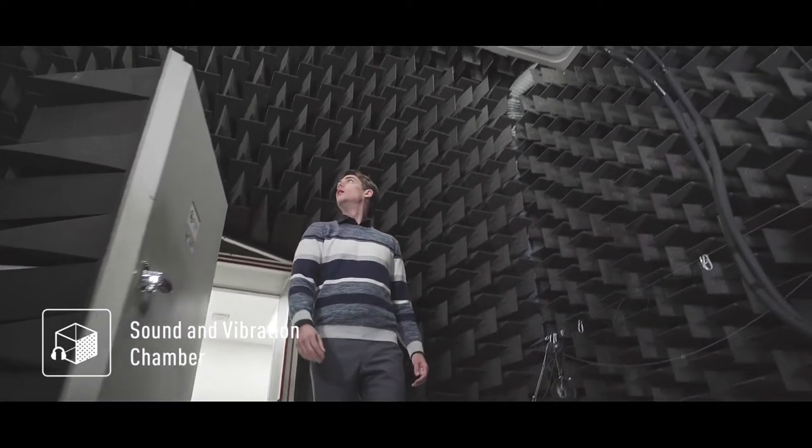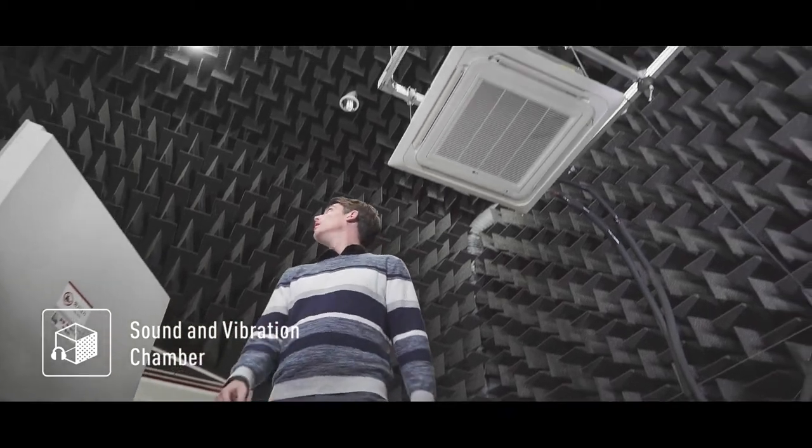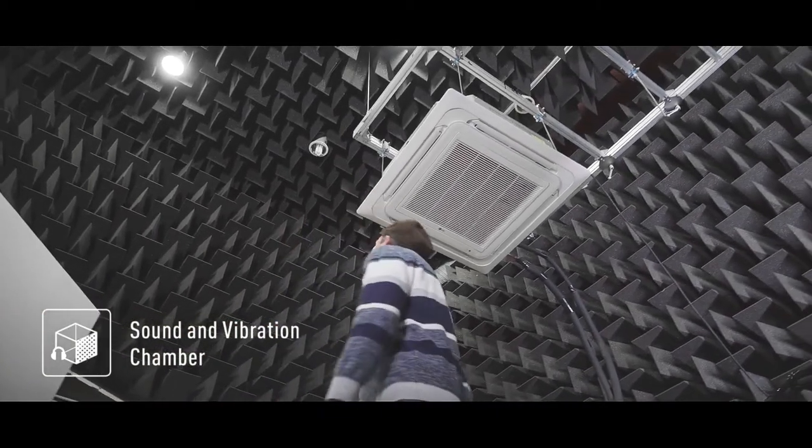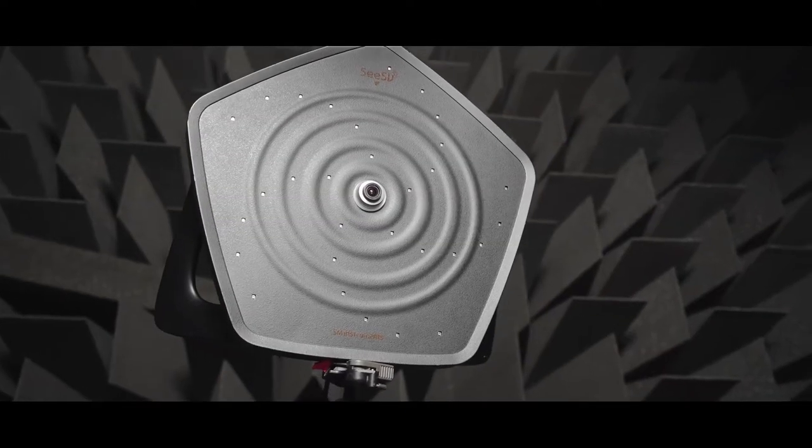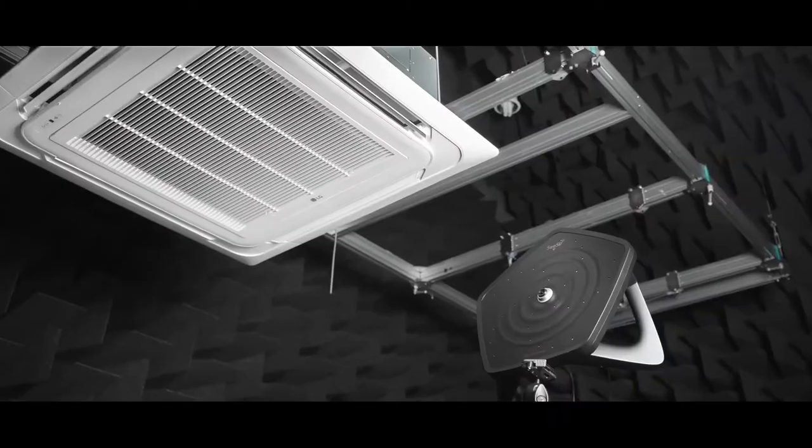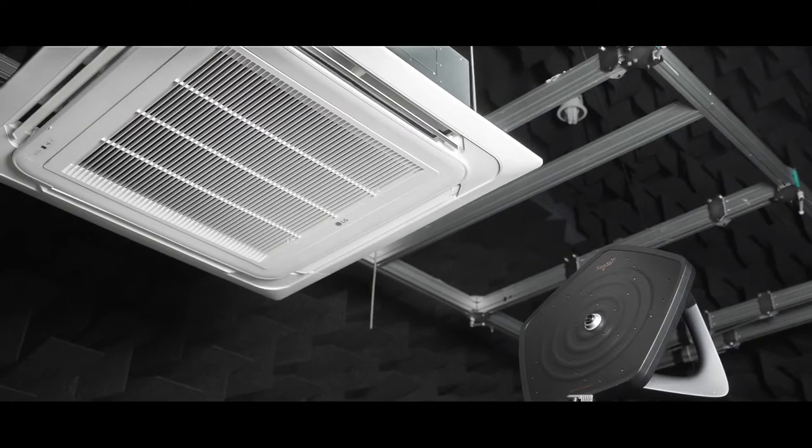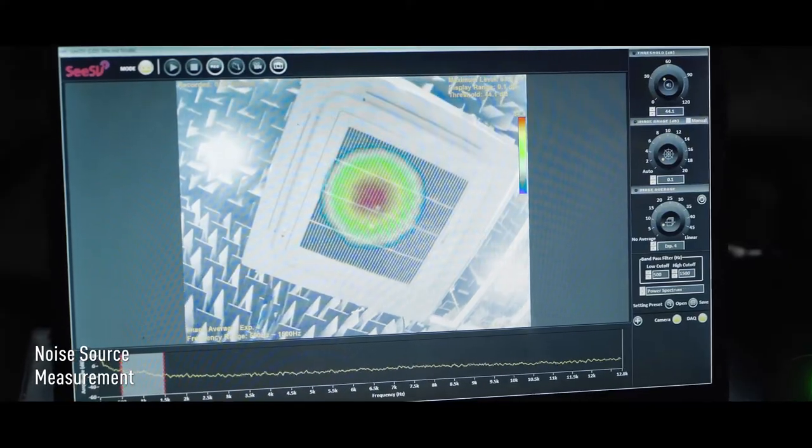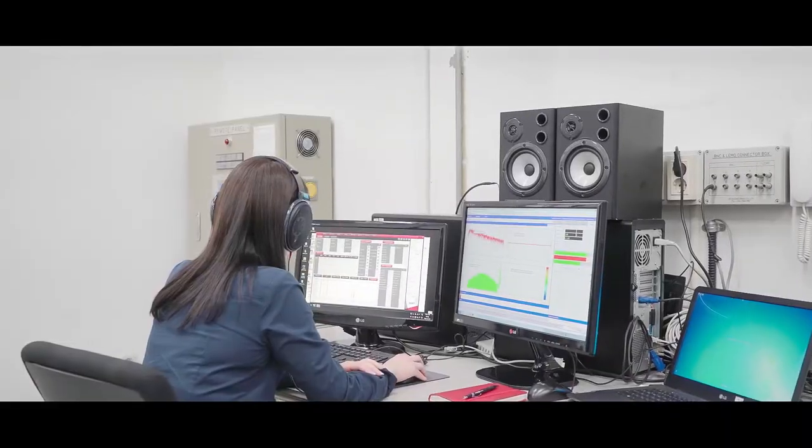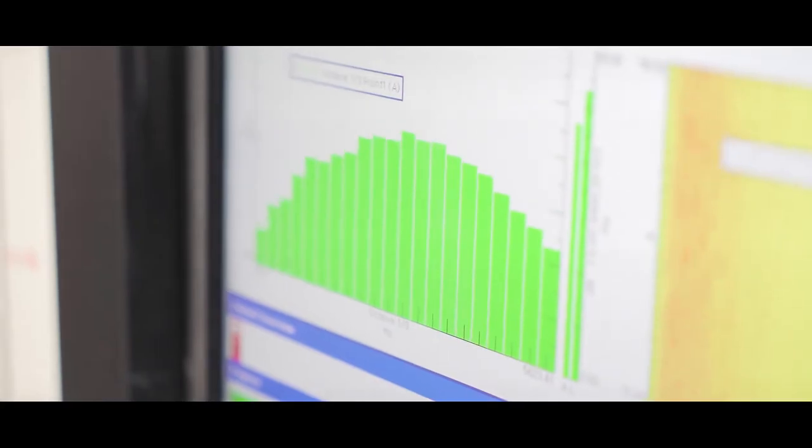As soon as I entered the sound and vibration chamber, it was so quiet that I felt almost as if I had lost my hearing. In this space, I saw a special type of camera that allows researchers to precisely locate the source of sound using their eyes. Researchers here test the location and intensity of sound in order to reduce sound emission.